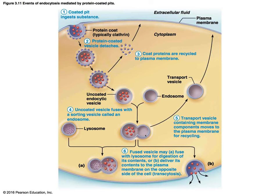The endosome then has a lysosome attach and fuse to it, where the contents may get digested. Alternatively, it can be delivered to the plasma membrane on the opposite side of the cell in the case of transcytosis.